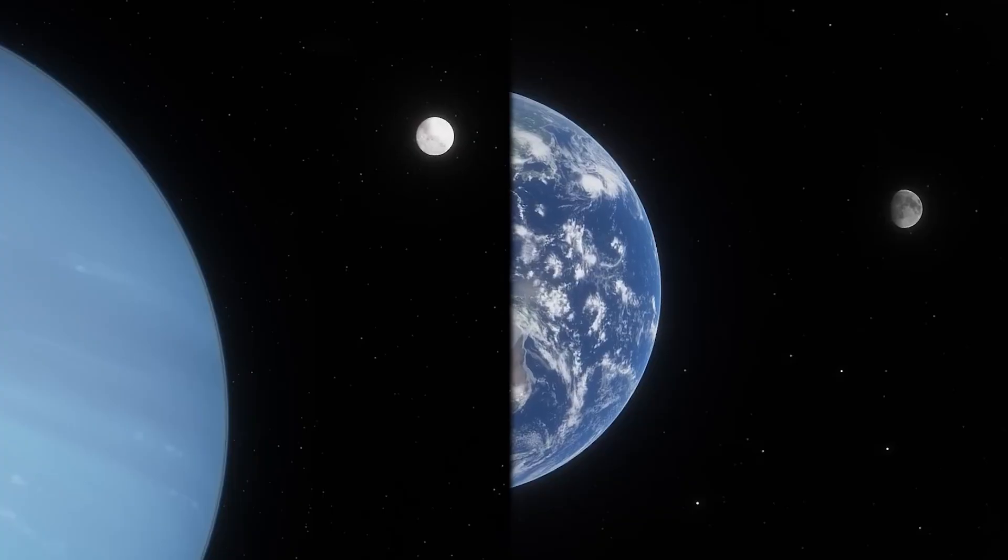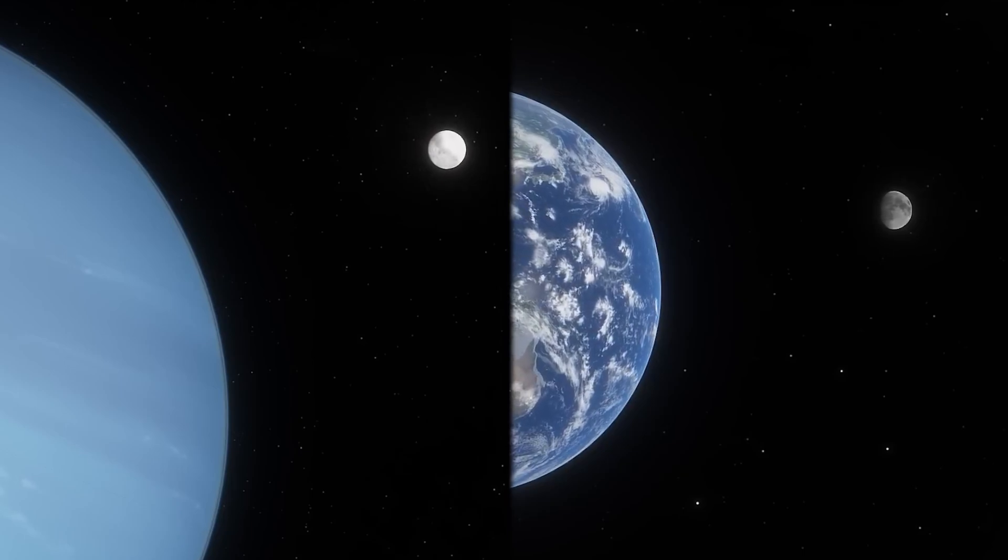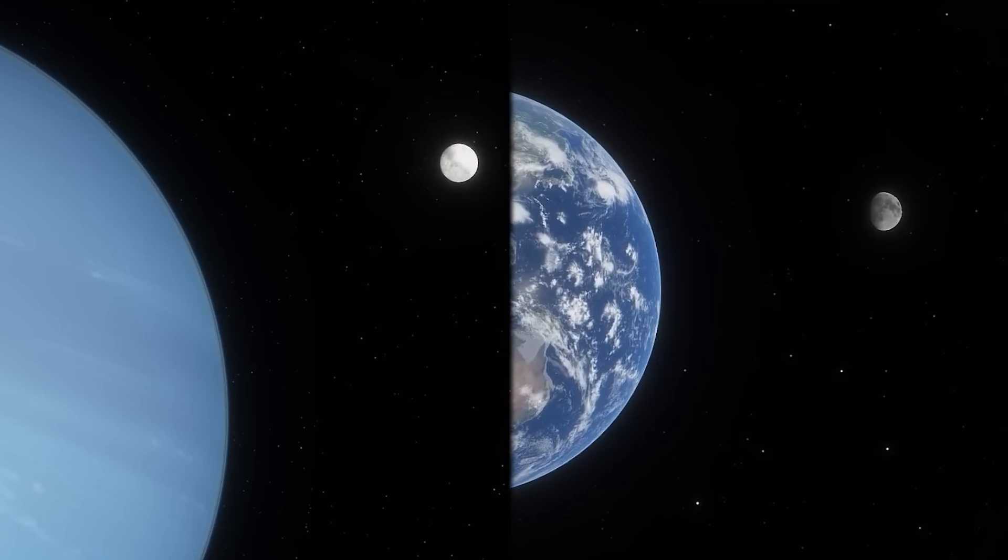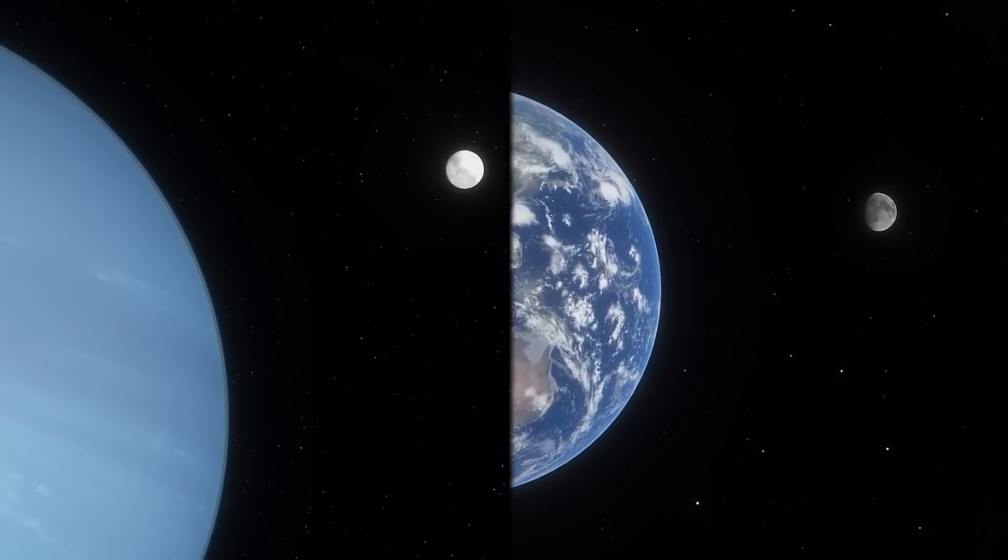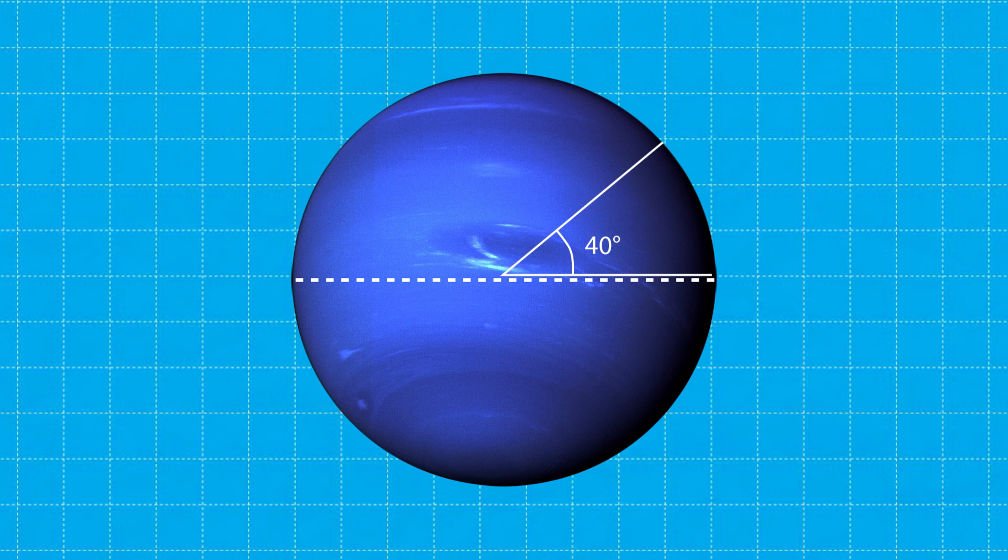Similar to our moon, Triton's rotation is also tidally locked to be synchronous with its orbit around Neptune, meaning it keeps one face oriented toward the planet at all times. Its equator is almost exactly aligned with its orbital plane. At present, Triton's rotational axis is about 40 degrees from Neptune's orbital plane.